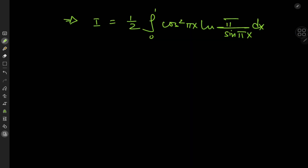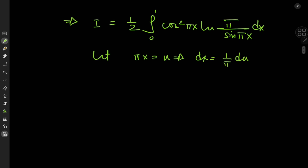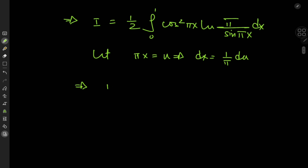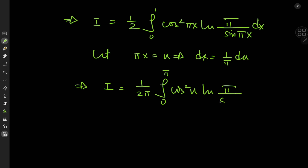Now for a substitution, we let pi times x equal u, which implies that dx equals 1 over pi du. As x approaches 0 we have u approaching 0, and as x approaches 1 we have u approaching pi. So i equals 1 over 2pi times the integral from 0 to pi of cosine squared u times the logarithm of pi divided by sine u du.